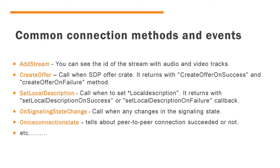I have listed some of the common methods or events used in WebRTC. The AddStream event will give the ID of the stream with audio and video tracks. In the create offer event, you can see the offer request. You can check whether the request succeeded or failed with the help of the create offer on success and create offer on failure methods. Another event name is set local description, where you can check the local description state. These are some of the WebRTC event names. There are many other event names in the WebRTC connection, and you can see those events in the WebRTC Internals tab.